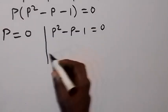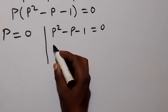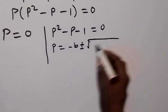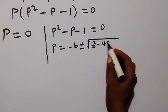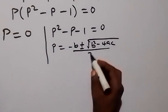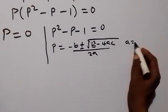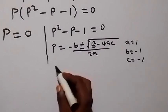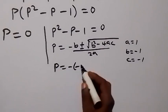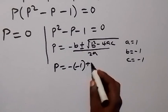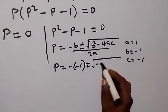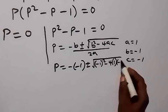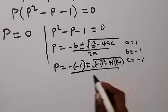Then from here we can solve this quadratic equation using the quadratic formula, which is p equals minus b plus or minus square root of b squared minus 4ac, over 2a. Here a equals 1, b equals minus 1, and c equals minus 1.